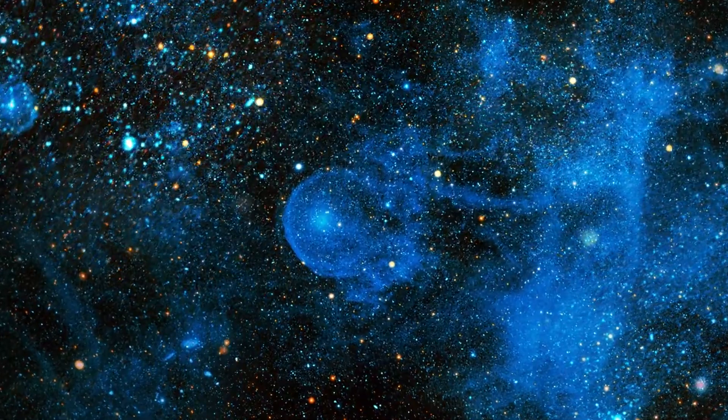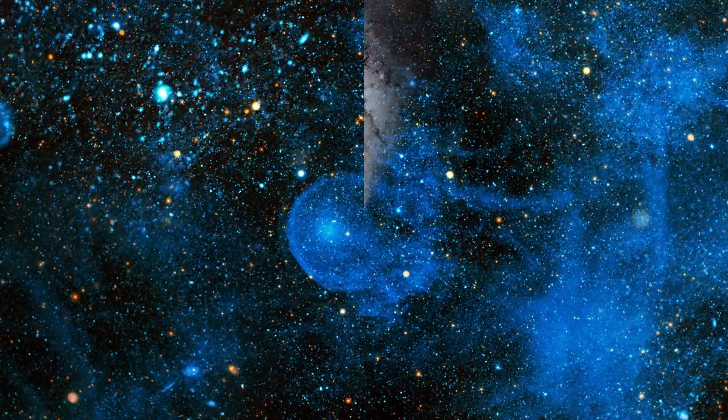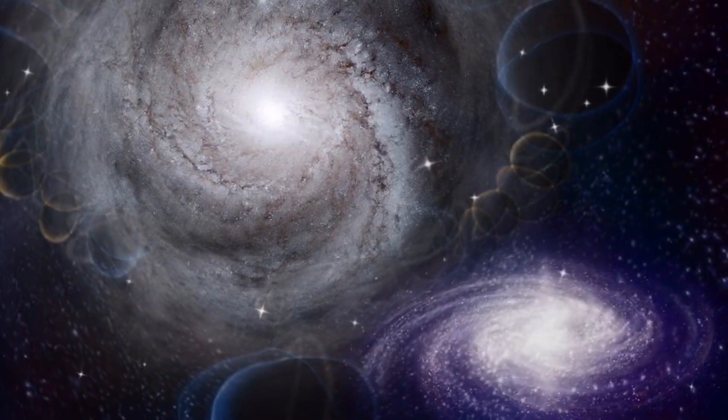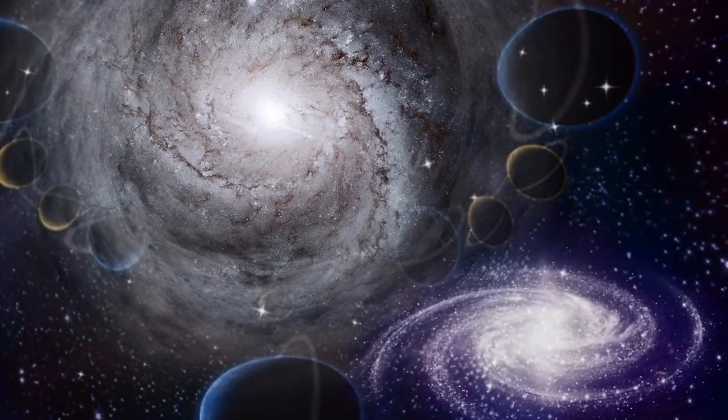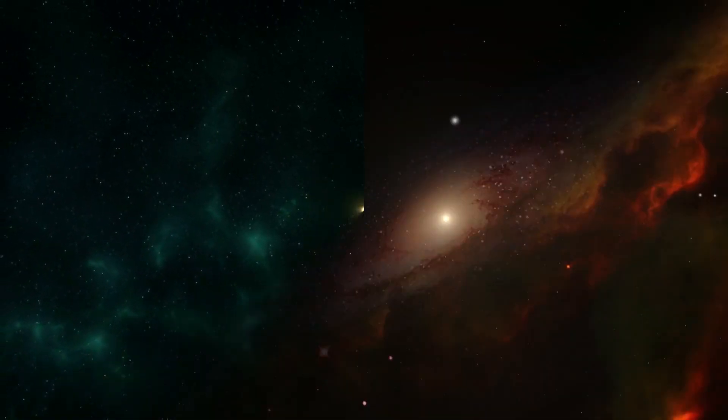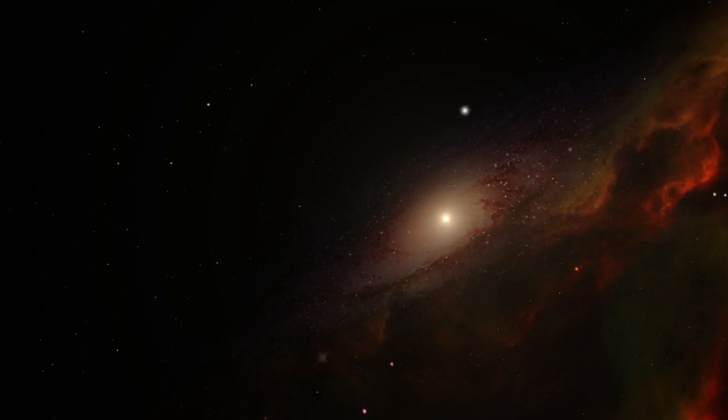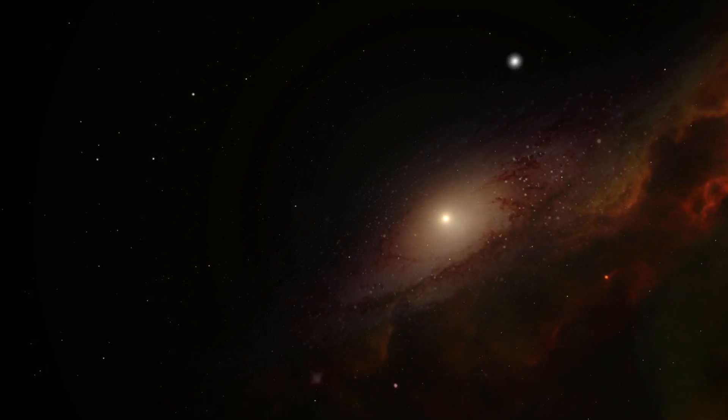The behavior of Betelgeuse also has broader implications for our understanding of galaxy evolution. Galaxies are vast collections of stars, and their evolution is influenced by the life cycles of the stars within them. Supernovae play a crucial role in this process by distributing heavy elements throughout the galaxy, which can trigger the formation of new stars and planetary systems. By studying Betelgeuse and its eventual supernova, astronomers can gain insights into how these events contribute to the dynamic and ever-changing nature of galaxies.